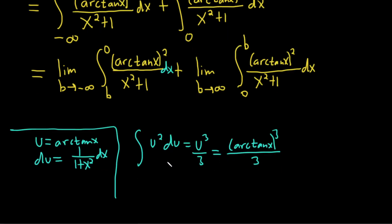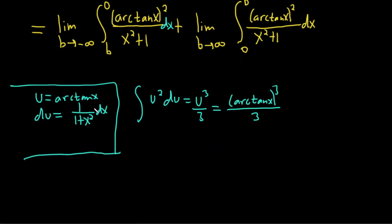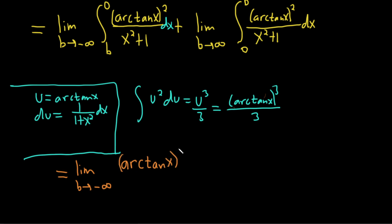Now we rewrite what we have. So this equals the limit as b approaches negative infinity. We integrated and we know the result, so we get arctan(x), cubed, over three, evaluated from b to zero. Be careful here — this is where most of the mistakes happen, so I'll go extra slow. You do the integration on the side and then apply the result to both cases.